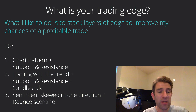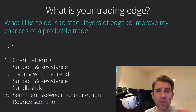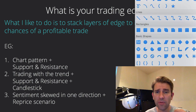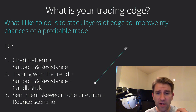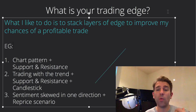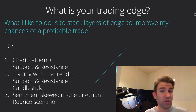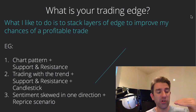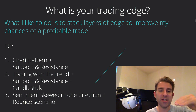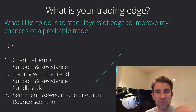Another example would be trading with the trend, support and resistance, and a candlestick. If we can imagine that we have an uptrend, and we already know that if we trade with the trend we're going to have a better chance of success than if we don't — so trading with the trend is one layer of edge. Now I want to stack another one onto it: I want to see a support and resistance level.